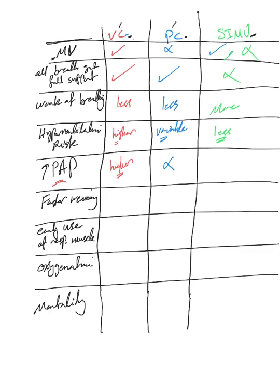In SIMV, it depends on whether you're using pressure control or volume control within it. Weaning is faster with SIMV compared to volume control and pressure control. Volume control and pressure control are slower for weaning compared to SIMV, though how statistically significant that difference is may vary.